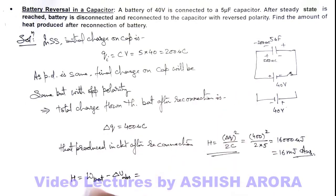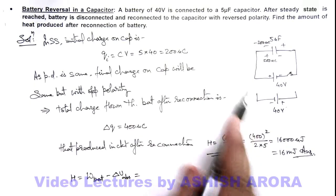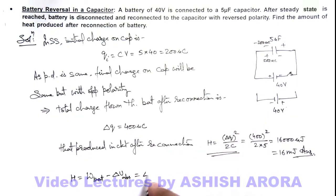So work done by battery can be calculated by the charge flown through battery multiplied by the potential difference, which is delta Q flow multiplied by battery EMF. So here it can be given as 400 microcoulomb multiplied by 40. So this is also 16 thousand microjoule, that is 16 millijoule.